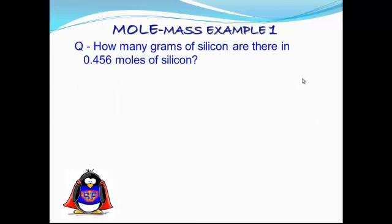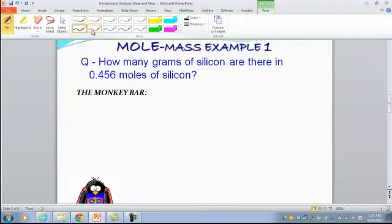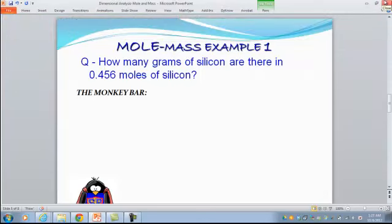Now let's look at a couple of examples for the mole and mass relationship. The question is: how many grams of silicon are there in 0.456 moles of silicon? This is the prime example where we can use the monkey bar approach to solve the problem. First, we need to get the molar mass because the question asks for grams from moles. First thing first, we need to check the molar mass for the element silicon.